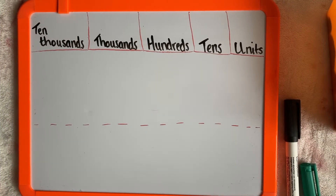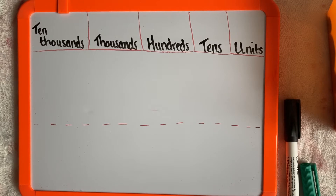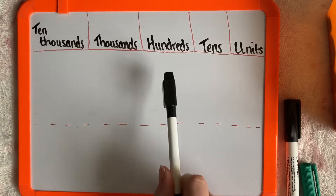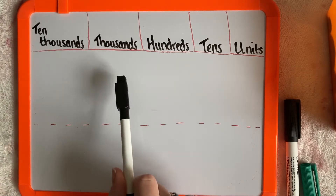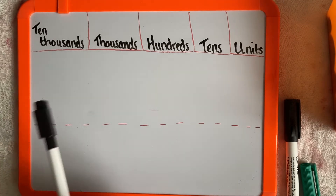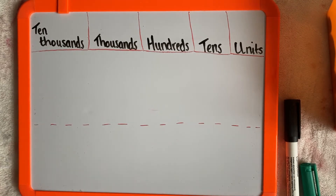Hello my lovelies, I'm back with another Place Value video today. However, this video is going to be focusing on five digit numbers. If you watched my first Place Value video, you will know that we worked through the units, tens, hundreds and thousands. Today we're also going to be looking at ten thousands. Let's get started.